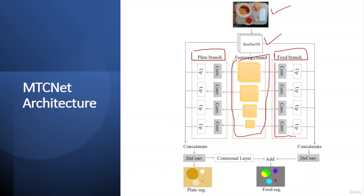If you notice, the convolution and upsampling operations on both food branch and plate branch are the same. And after applying the convolution and upsampling layers, these are concatenated. Finally, you can see the deconvolution layer is applied on both sides.